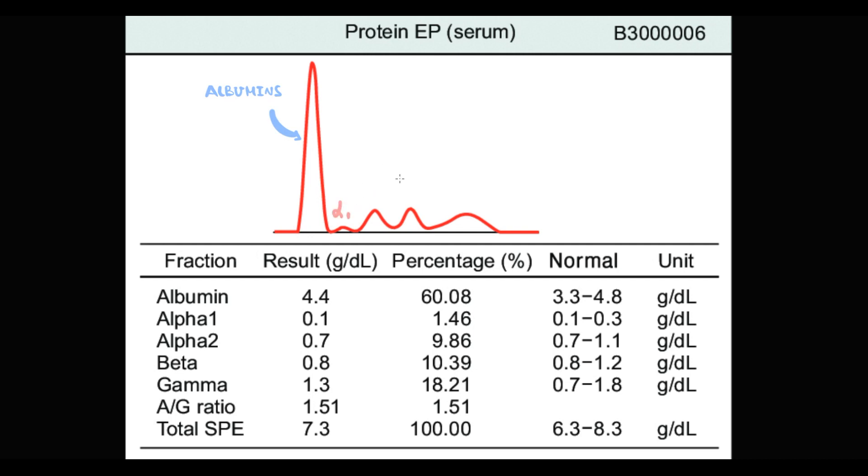Then we see alpha 1 fraction, alpha 2 fraction, and beta fractions. And the last ones are gamma globulins, which are mostly immunoglobulins.